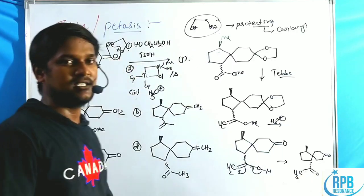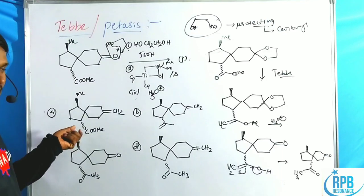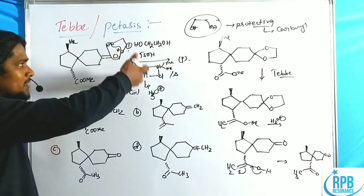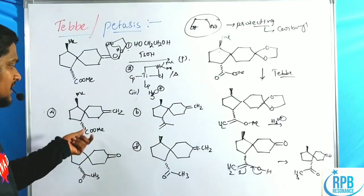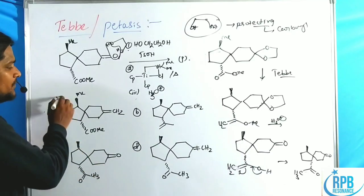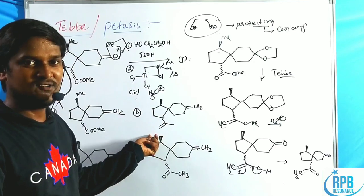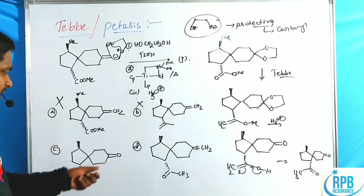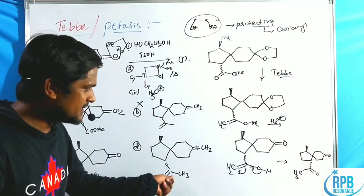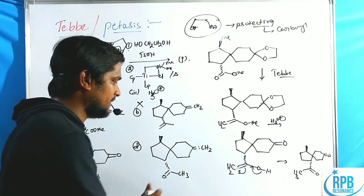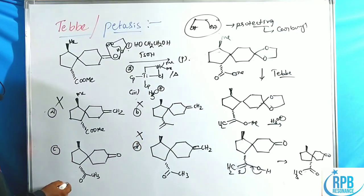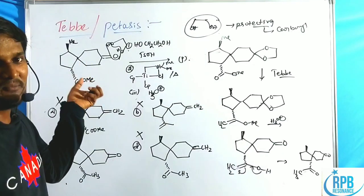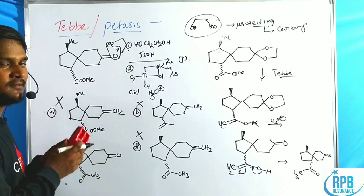In the third step, treatment with H₃O⁺ causes hydrolysis (deprotection), regenerating the original carbonyl and giving a CH₂OH group, which undergoes keto-enol tautomerism to yield a ketone (C=O with CH₃). Checking the options: option A (methylation at protected carbonyl) is wrong; option B (both methylated) is wrong; option D (incorrect ketone structure) is wrong; option C is the correct answer.